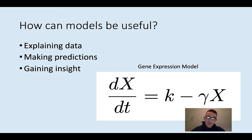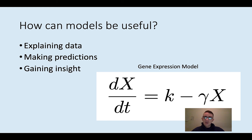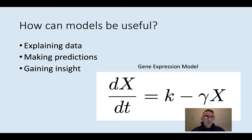So for this next slide I listed how models can be useful, and there are really three things. The first is explaining data — like experimental data you have, you want to use your model to explain it. The second is making predictions: if you have a model and want to validate it, you try to make predictions about an experiment you haven't done yet and see how they do. The third and probably most important thing is using the model to actually gain insights about the biology — or whatever field you're modeling — to actually learn something and gain new knowledge about the system.